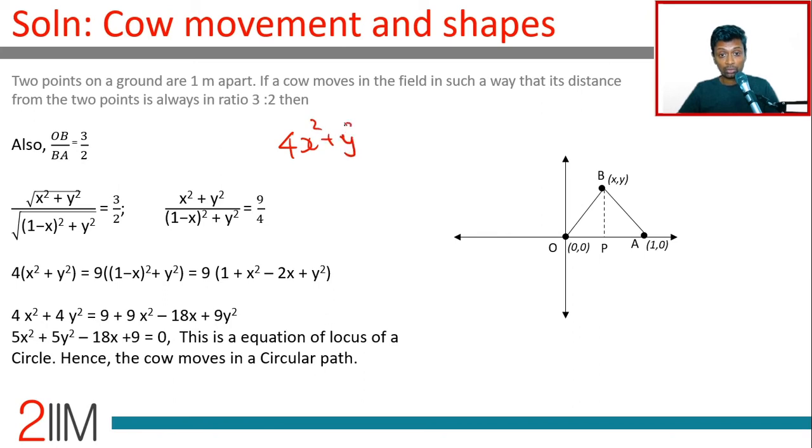4 x square plus 4 y square is 9 into x square minus 2x plus 1 plus 9 y square. Move both of these to that side: 5 x square plus 5 y square minus 18x plus 9 is equal to 0.